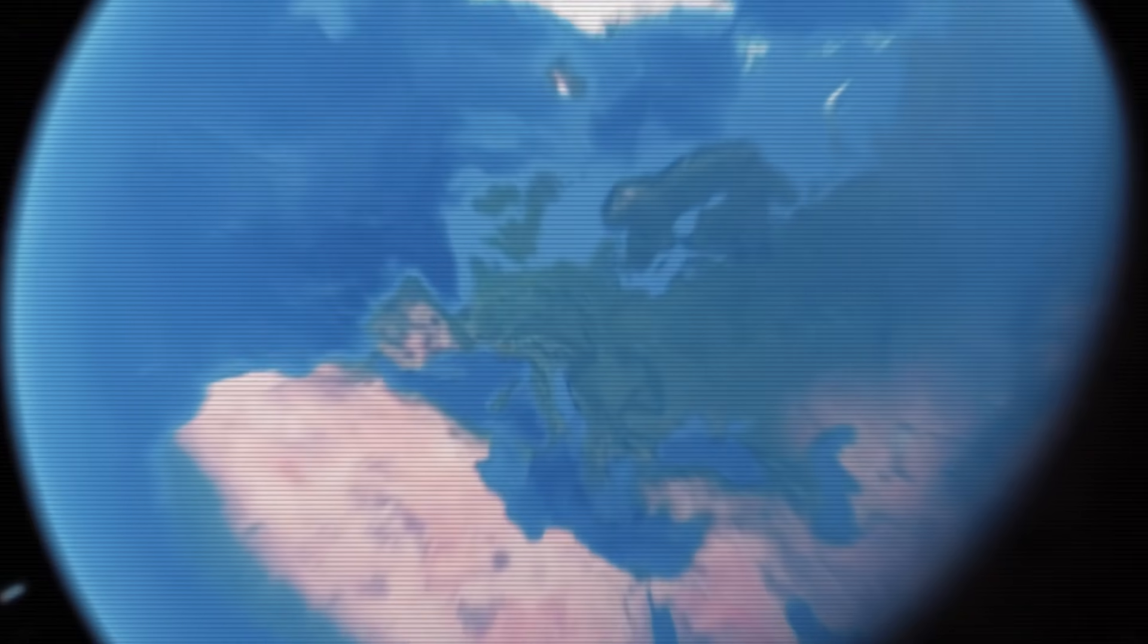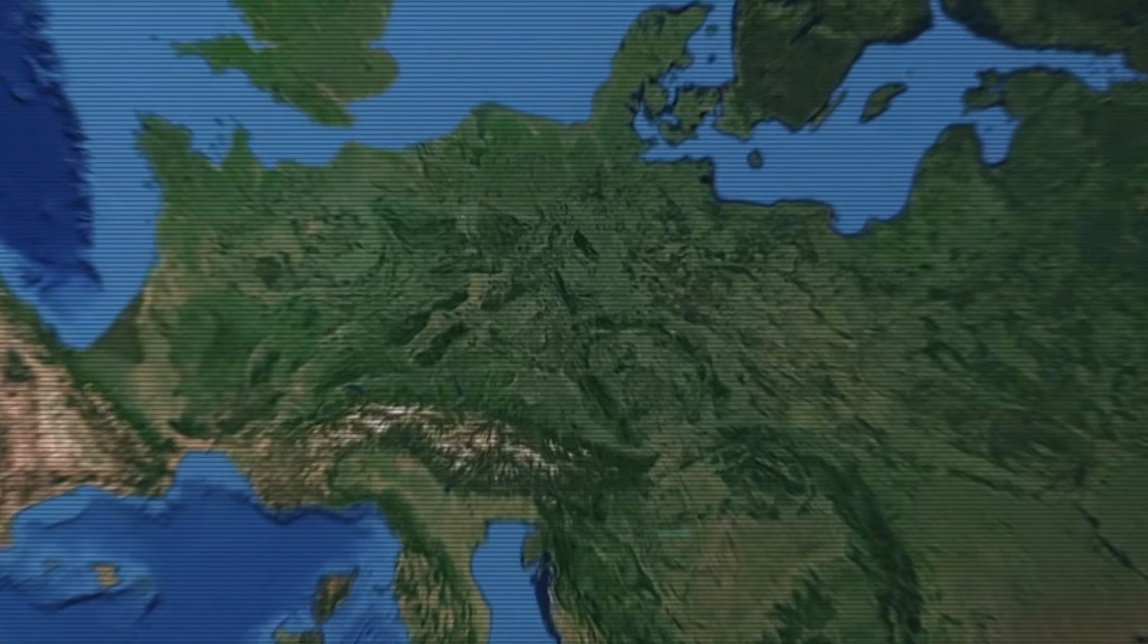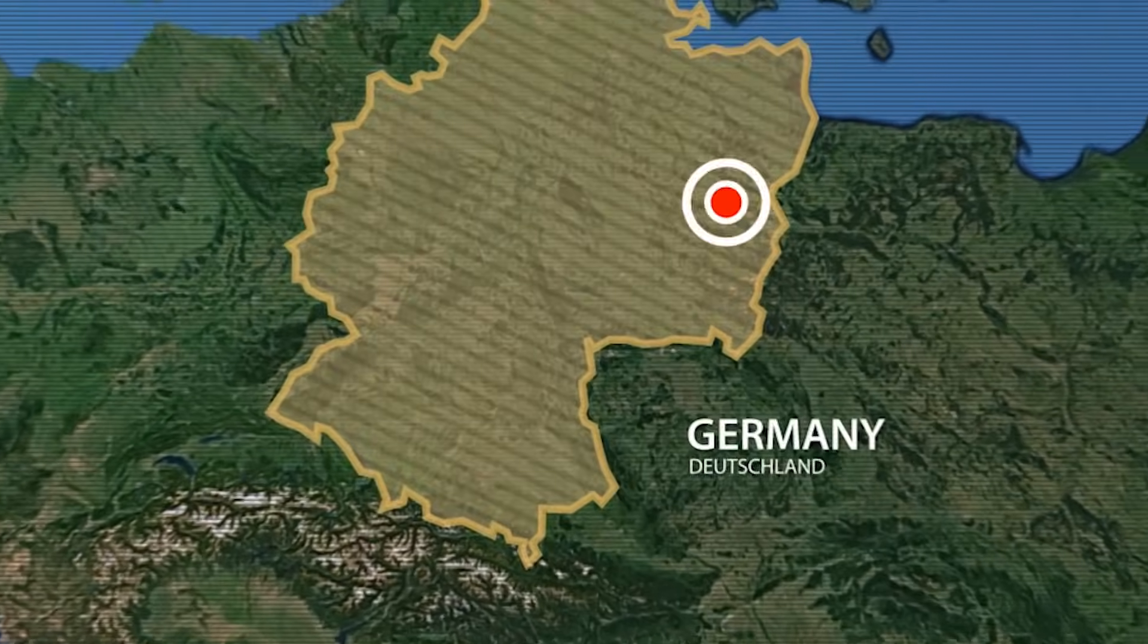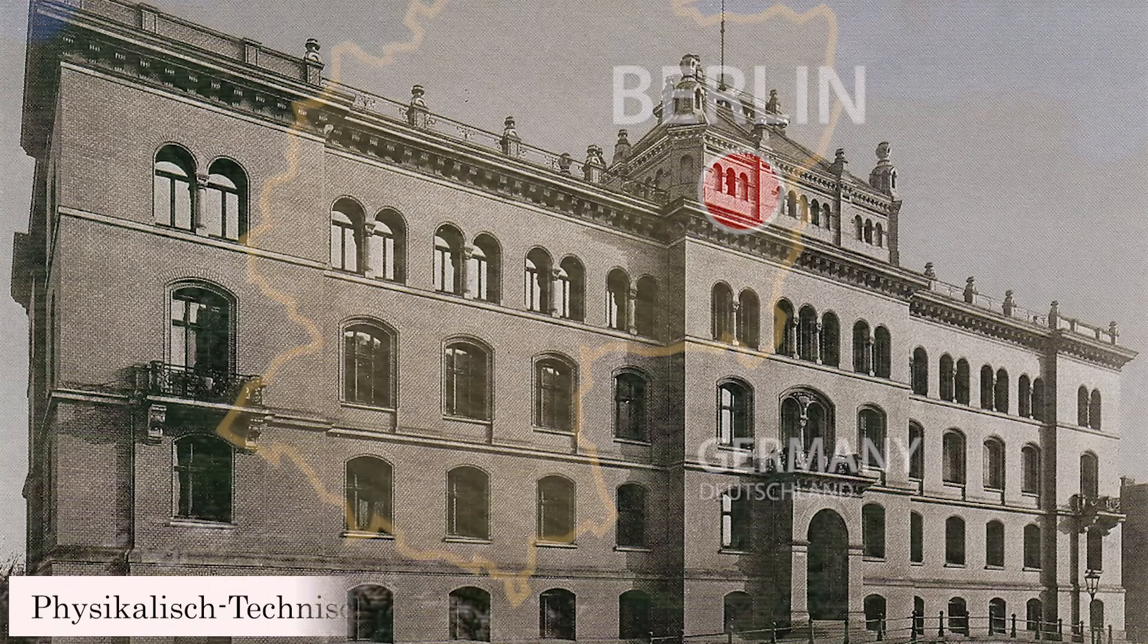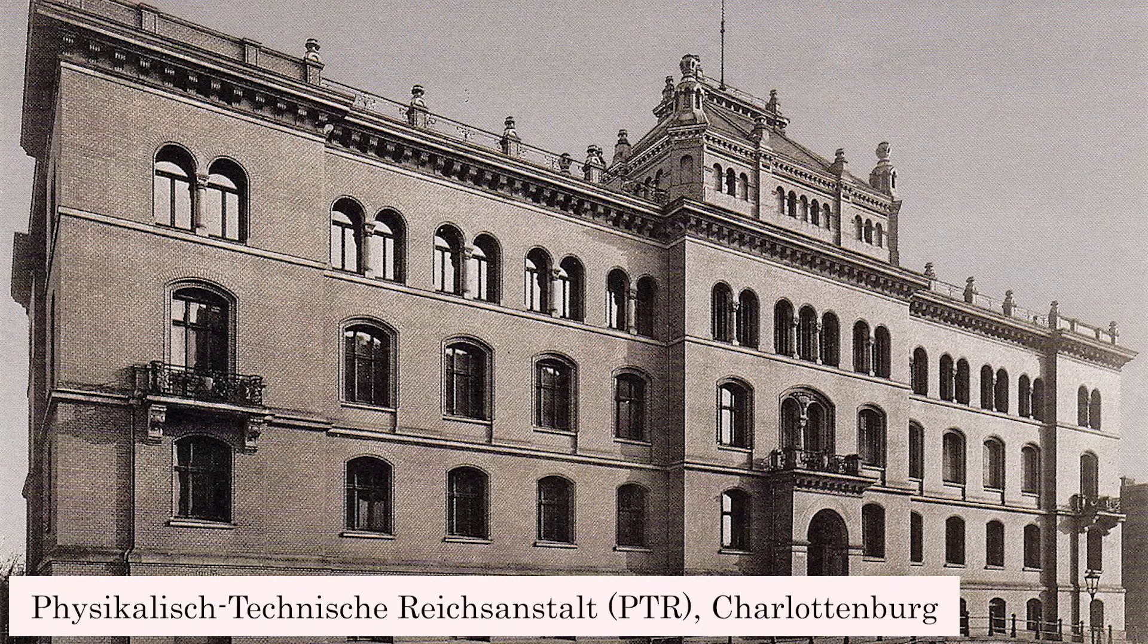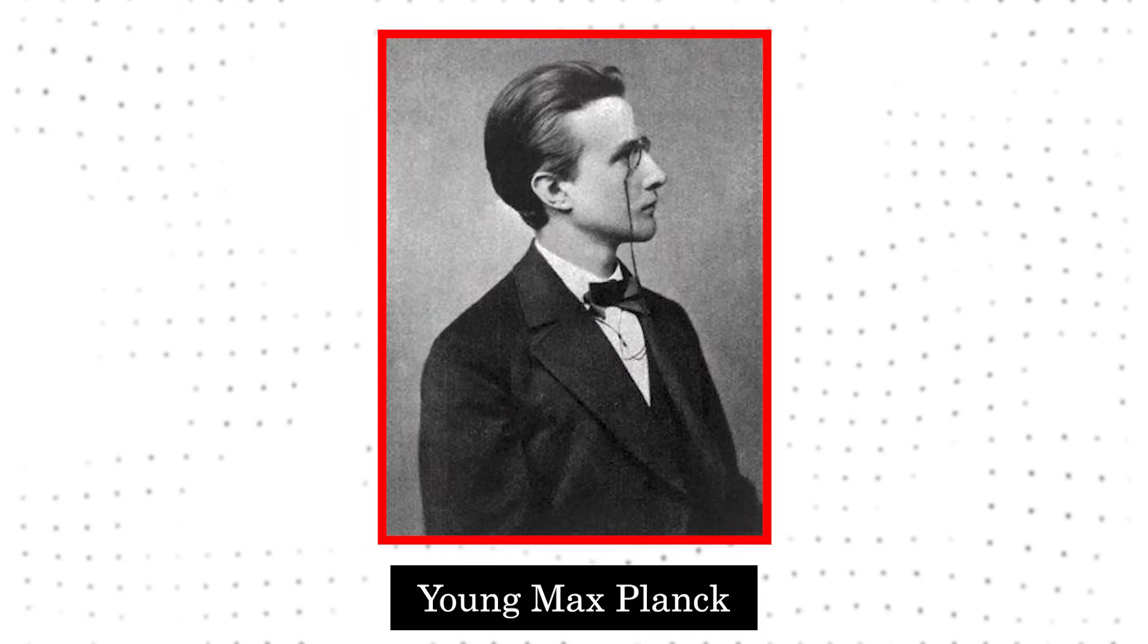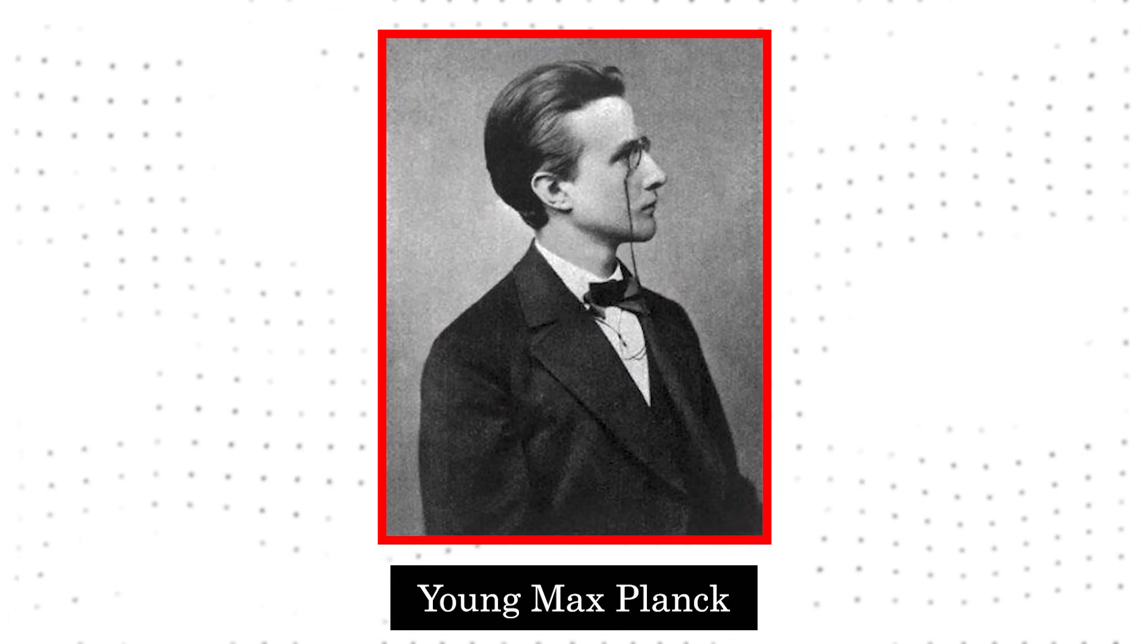In 1875, Kirchhoff accepted Berlin's first chair dedicated specifically to theoretical physics. After Kirchhoff's appointment, Berlin soon transformed into a hub for innovation in physics. Indeed, after Kirchhoff retired, the position was taken up by none other than Max Planck.